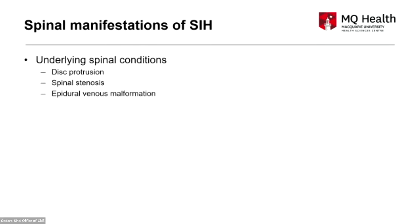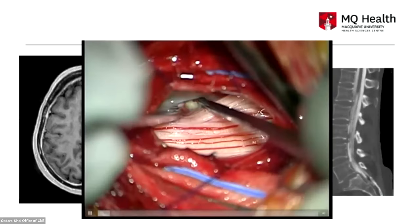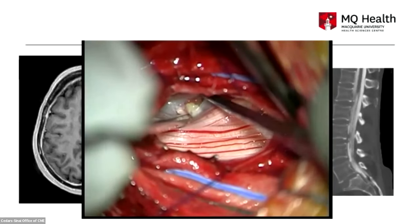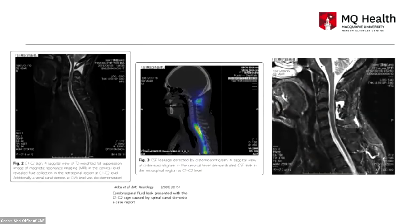Disc protrusion, spinal stenosis, and epidural venous malformations are underlying conditions worth considering. Here is an interesting case with MR imaging demonstrating an intradural disc protrusion — barely seen on imaging — and at operation there is an intradural disc protrusion through a dural defect. Regarding spinal canal stenosis: I was struck by a case report where the patient presented with myelopathy and orthostatic headache.